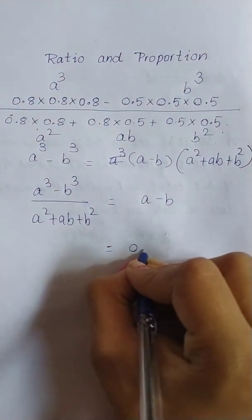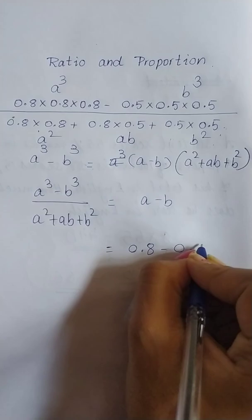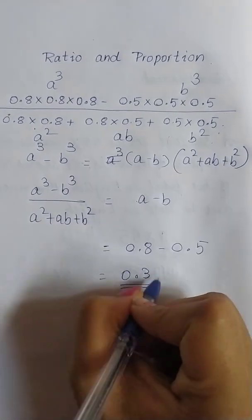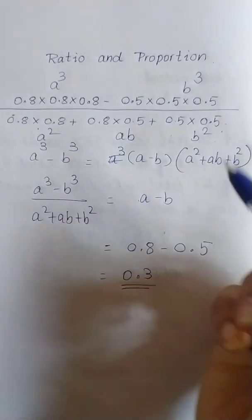So, hence what is A? 0.8 and B is 0.5, which is equal to 0.3. Hence what is A minus B? It is 0.3. The value of this is 0.3.